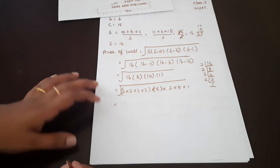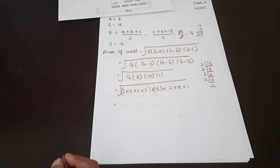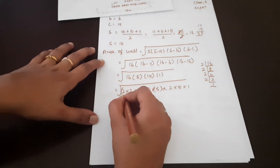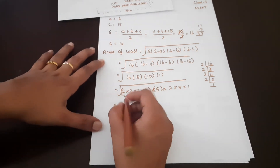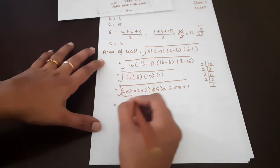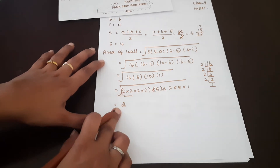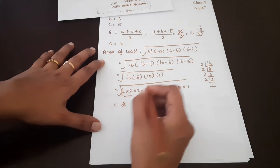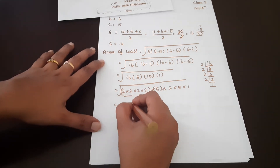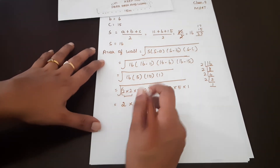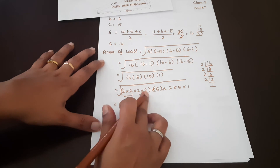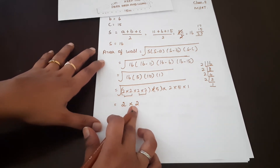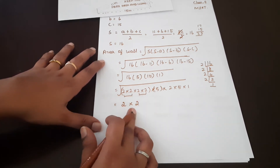Now we have pairs. We take each pair out of the root: we have a pair of 2 into 2, and a pair of 5 into 5, so we take one 2 and one 5 out of the root.